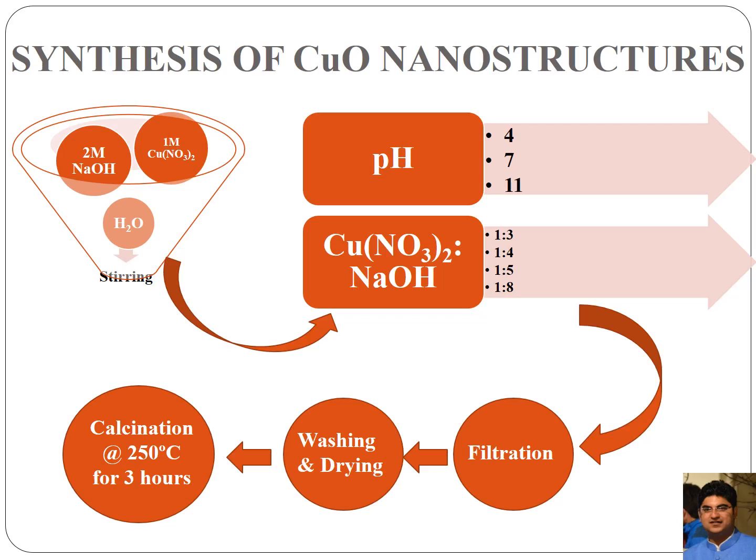Now the synthesis of copper oxide nanostructures. The synthesis procedure involved was very simple and the method used was wet chemical precipitation method. Initially a solution of one molar copper nitrate was prepared, two molar sodium hydroxide solution was added drop wise and the mixture was continuously stirred. Two kinds of synthesis were undertaken: first the pH of the reaction was varied, continuously monitored and changed by adding sodium hydroxide drop wise.